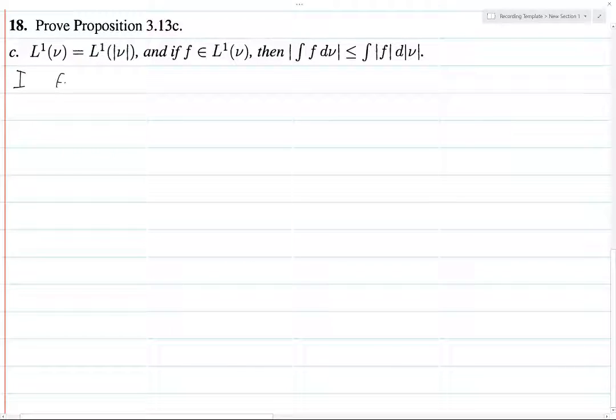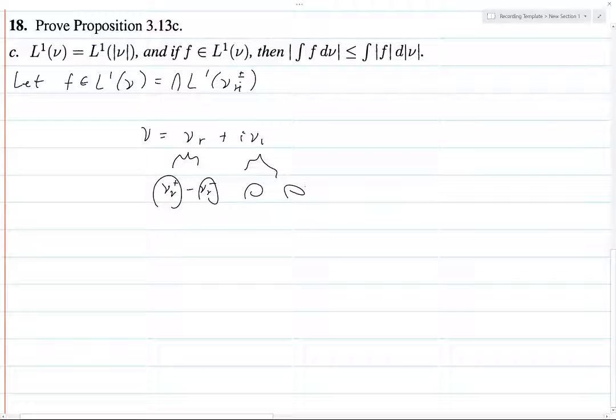I won't write that out, but we're going to do the first part first to prove that inequality. So what I'm going to start with is let F be in L^1(ν), and this I'm going to write as the intersection of L^1(ν_{ri}^{±}), and that's because ν is equal to ν_r plus i ν_i, and then this we could write as ν_r^+ minus ν_r^-, and we could do the same thing for here. Basically, the intersection of these four L^1s is how we define L^1 of a complex measure.